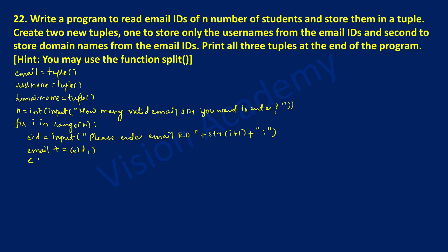Next, I am going to take a variable called e equal to eid.split('@'). As the question itself mentioned, you may use the function split in order to separate username and domain name. Here, I am going to use the variable called username: username is equal to username plus e[0], close the bracket, put comma, then close the round bracket.